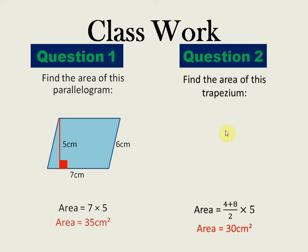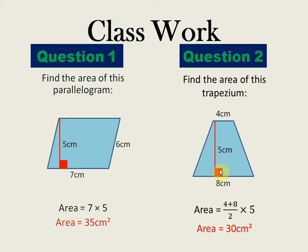Now we find the area of the trapezium — a shape which has only two parallel sides. The formula is: ½ × sum of parallel sides × height. The parallel sides are 8 cm and 4 cm. So 8 + 4 = 12, divided by 2 = 6. Then 6 × 5 = 30. The area of the trapezium is 30 cm².